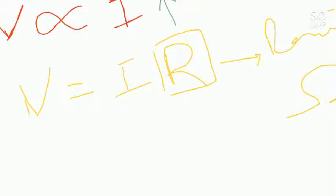And where has this, from where has this R emerged? The source of R is this constant of proportionality. On removing the constant of proportionality, we include a constant. And here in our case, it is the resistance. Simple.